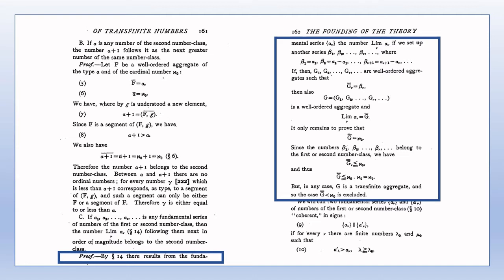However, since g is a transfinite aggregate, the cardinal number of g cannot be less than aleph naught, since that would imply that g was a finite aggregate. Recall that aleph naught is the smallest transfinite cardinal, and so any ordinal number less than aleph naught must be finite.